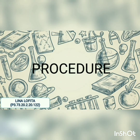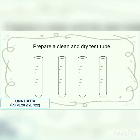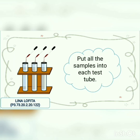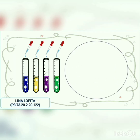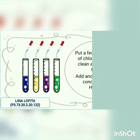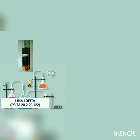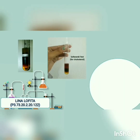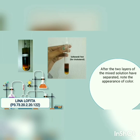Procedure: Prepare clean and dry test tubes. Put all the samples into each test tube. Put a few mg of chloroform in a clean and dry test tube, then add and mix 1 ml of concentrated H2SO4. For the Salkowski test for cholesterol, after the two layers of the mixture have separated, note the appearance of color in the concentrated H2SO4 layer.